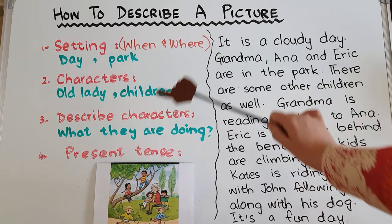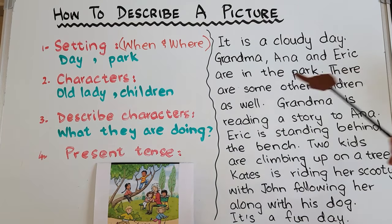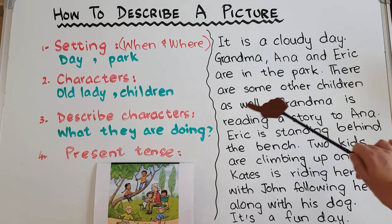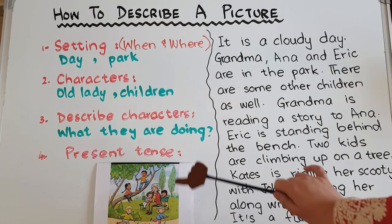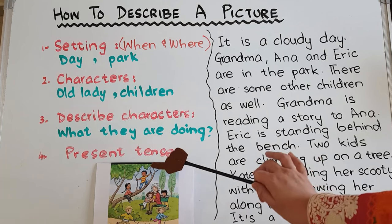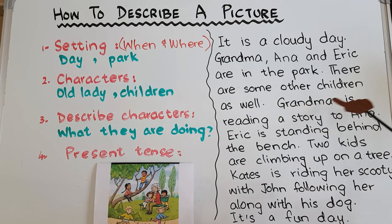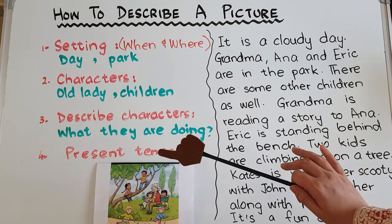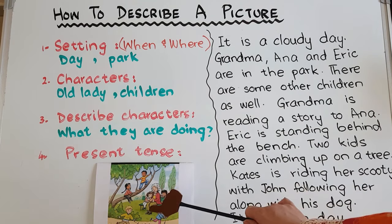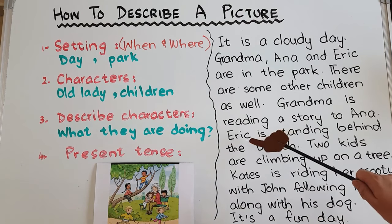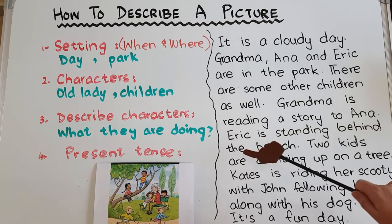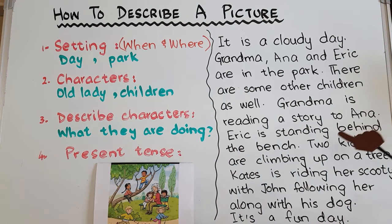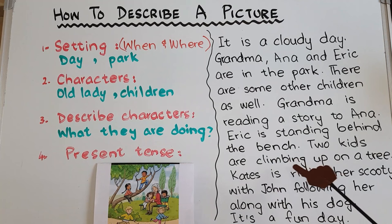'There are some other children as well' — these are the other characters of the paragraph. 'Grandma is reading a story to Anna' — now describing what the characters are doing. 'Eric is standing behind the bench.' Here he is. 'Two kids are climbing up on a tree.' I have used the present continuous tense — it's continuous but it's still present.